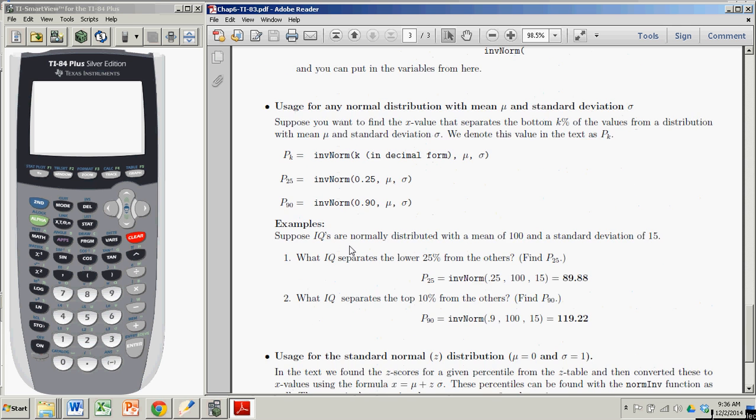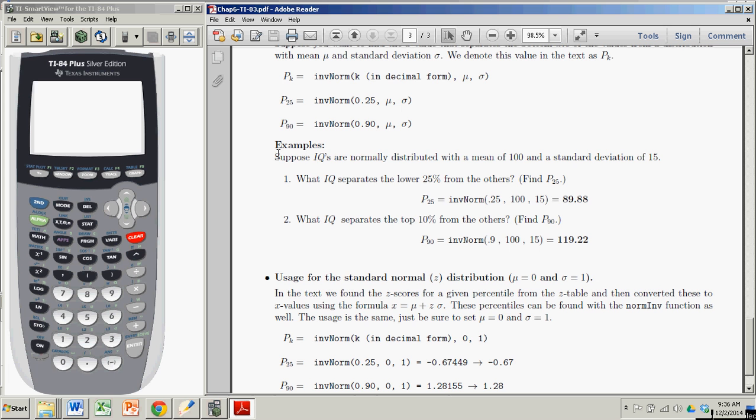For example, suppose IQs are normally distributed with a mean of 100 and a standard deviation of 15. Suppose I want to find what IQ separates the lower 25% from the others. In other words, what I'm trying to find is P sub 25, the 25th percentile of this particular normal distribution.